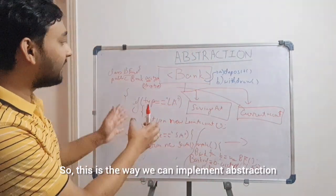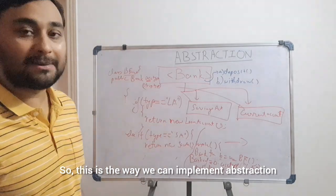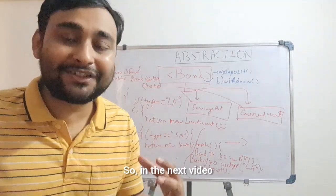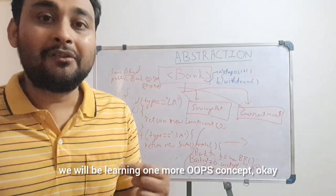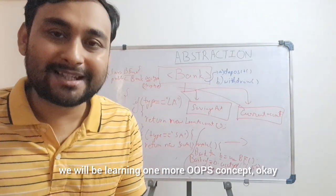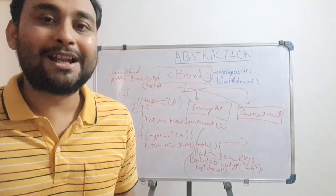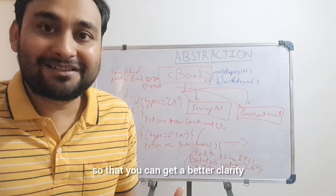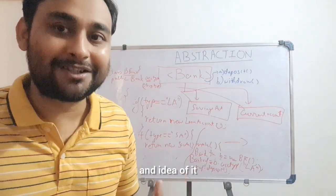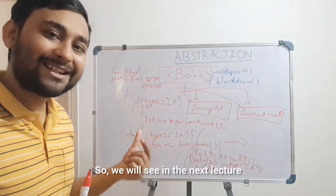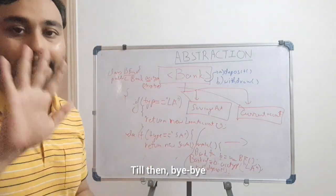You can take any example — a vehicle, any transporting instrument. I have taken this bank example, which is very famous, and you can use it to explain the interviewer how abstraction works. This is the way we can implement abstraction. In the next video we will be learning one more OOP concept to give you better clarity. See you in the next lecture — bye-bye.